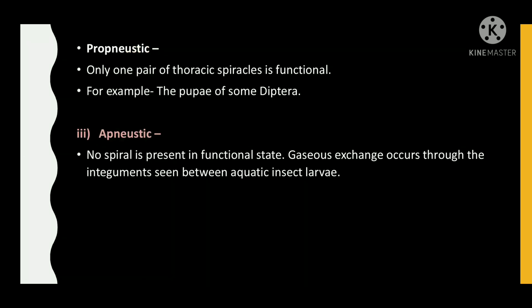Propneustic — only 1 pair of thoracic spiracles is functional, for example the pupae of some Diptera. Apneustic — no spiracle is present in a functional state; gaseous exchange occurs through the integument, seen in aquatic insect larvae.